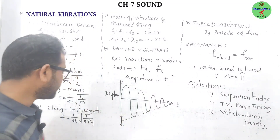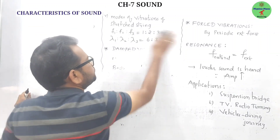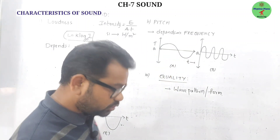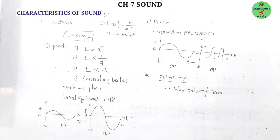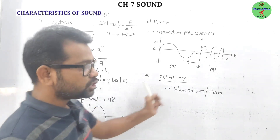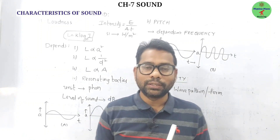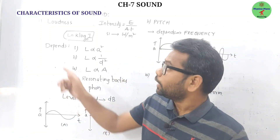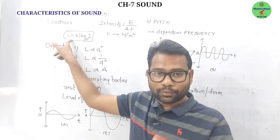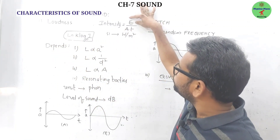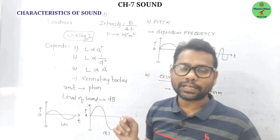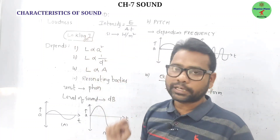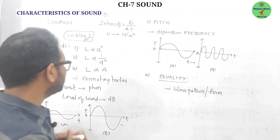The last concept is the characteristics of sound. There are three characteristics: loudness, pitch, and quality. Loudness is the characteristic by which we differentiate a louder sound from a faint one. Intensity is the amount of energy passing per unit area per second, with units watts per meter squared. Loudness and intensity are related.